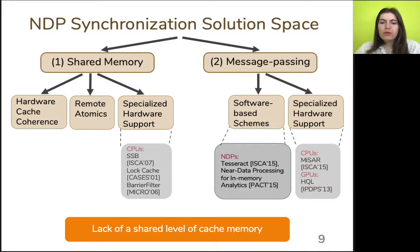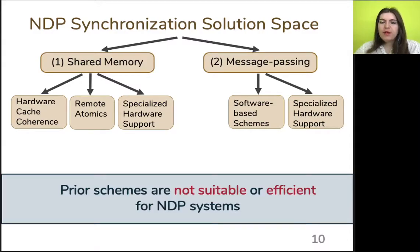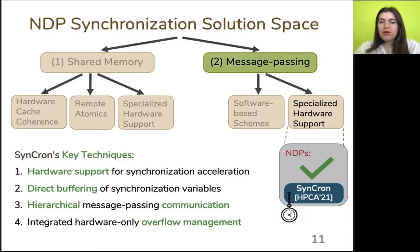Recent NDP works propose software-based message passing schemes that can be applied in NDP systems. However, our evaluation results demonstrate that these schemes are still quite inefficient, because they use main memory to access synchronization variables, thus incurring high latency costs. Overall, we find that prior synchronization solutions are not suitable or efficient for NDP systems, and synchronization via a shared memory approach would need to be implemented using main memory with a great penalty for performance and energy. To this end, we design our approach Synchron, building on the message passing synchronization concept.